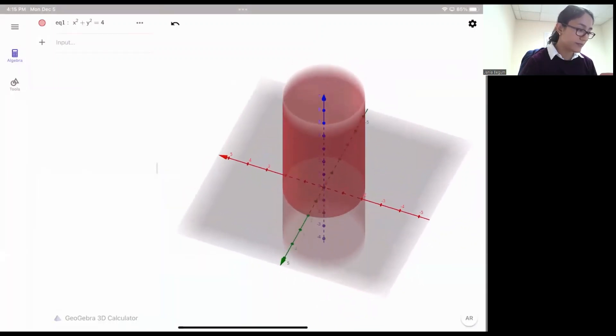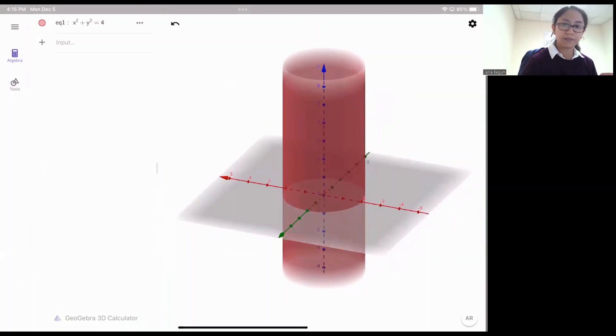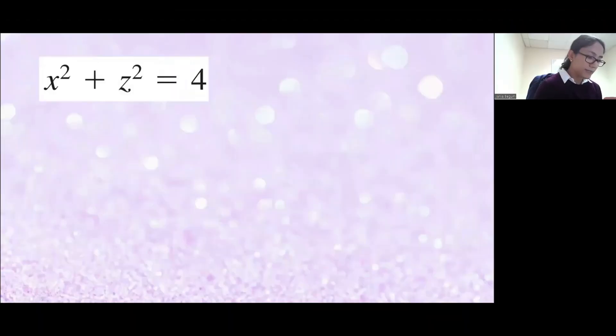So that's the surface of x squared plus y squared is equal to 4. Here is another one. This is also a cylinder because we have x squared plus z squared. Y is missing. So if the variable is missing, it's going to open along that axis, missing axis.